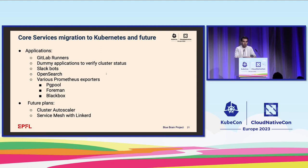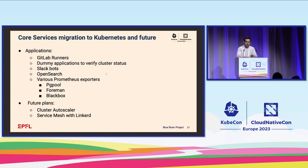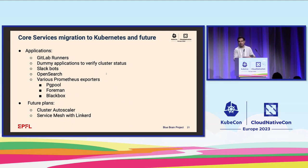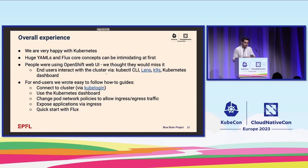Regarding my team's migration into Kubernetes and future plans for the cluster: it's true that we have this cluster and offer it to the organization, but we still run most of our services in VMs on OpenStack. Some examples of applications already running in Kubernetes include GitLab runners, some dummy applications to verify cluster status, Slack bots, OpenSearch, and various Prometheus exporters. For future plans, we'd like to have some kind of cluster autoscaler so VMs on OpenStack are deleted or created depending on cluster load, and we're interested in service mesh — probably with Linkerd — for mTLS between pods.